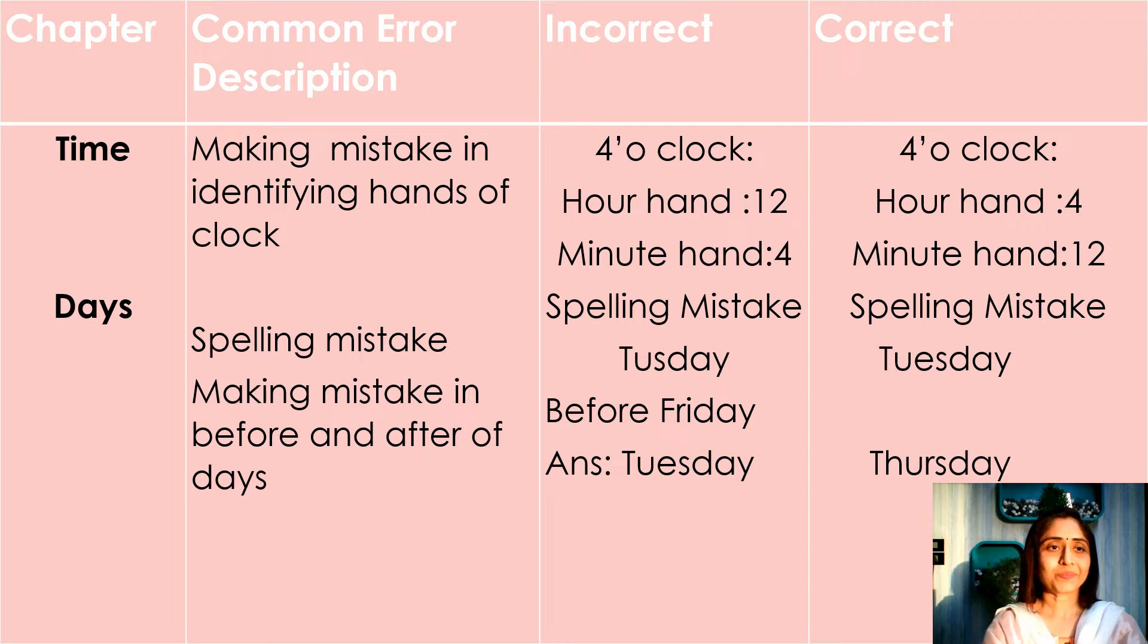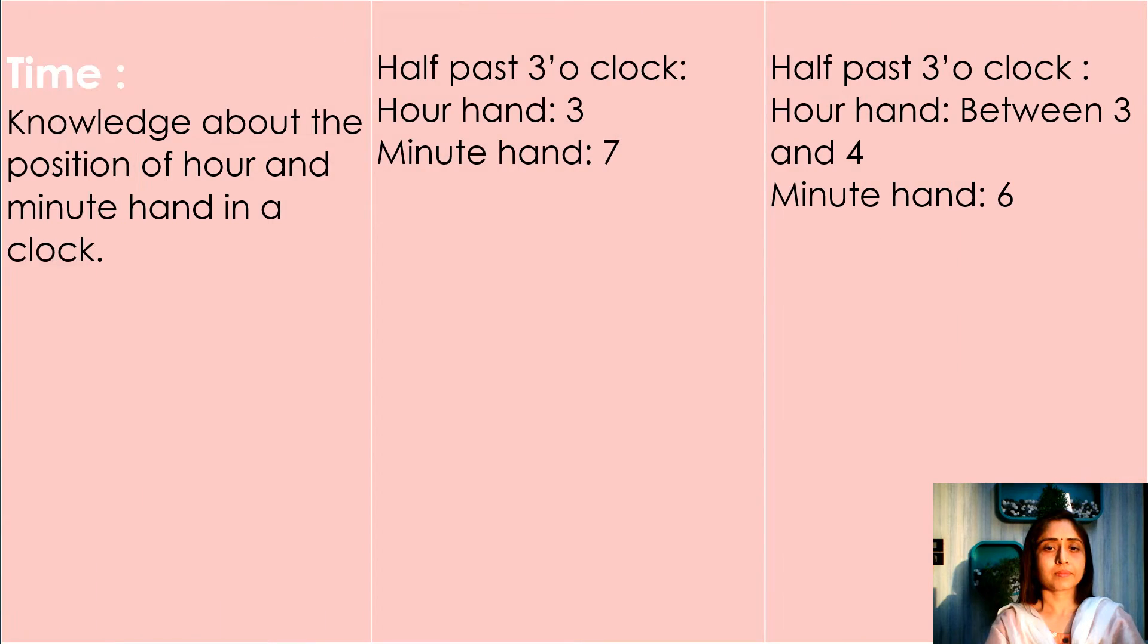Knowledge about the position of hour and minute hand in a clock. Actual position of hour hand is between 3 and 4 in half past 3 o'clock, and minute hand position is exactly on 6.